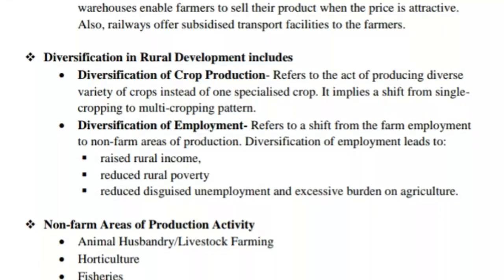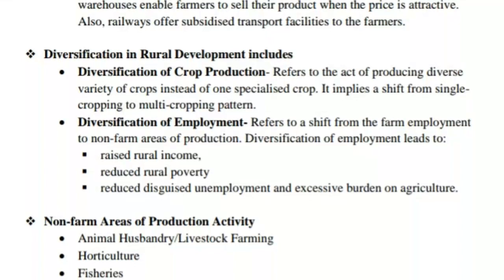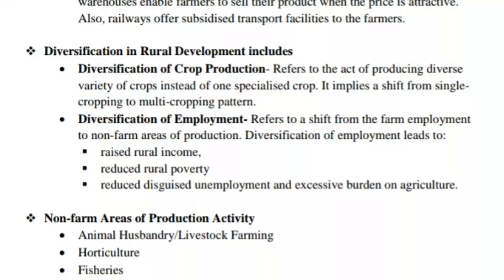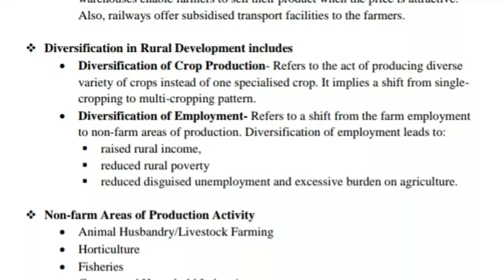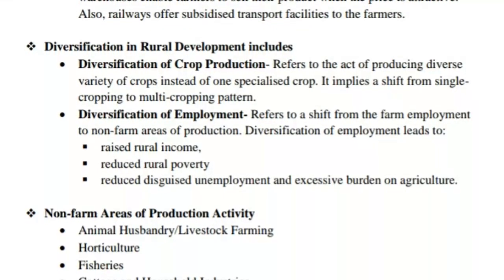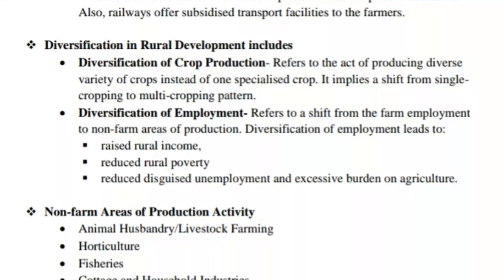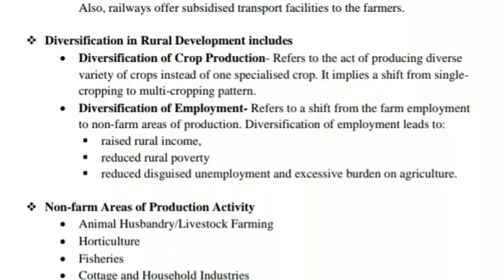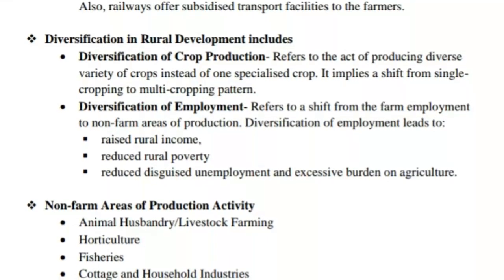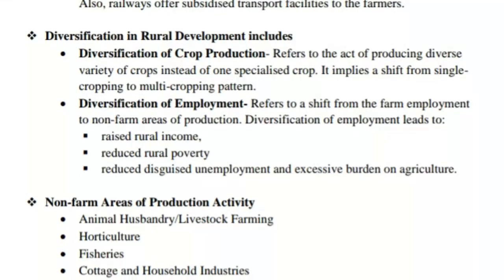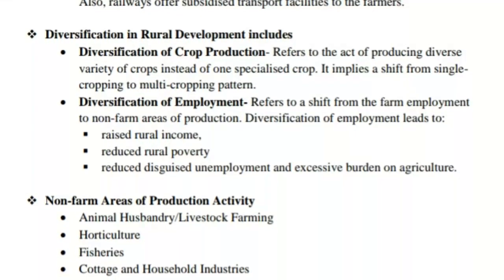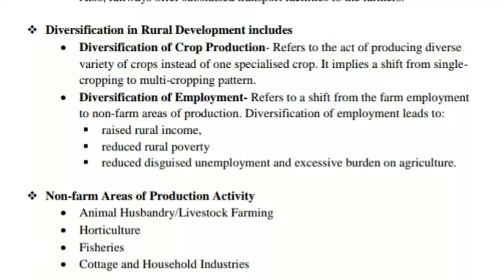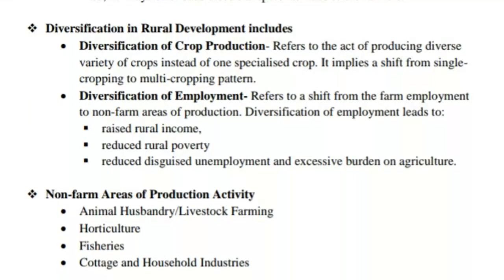Also, railways offer subsidized transport facilities to farmers. Diversification in rural development includes diversification of crop production, which refers to the act of producing a diverse variety of crops instead of one specialized crop. It implies a shift from single-cropping to multi-cropping patterns.